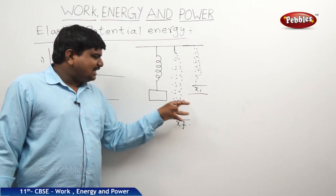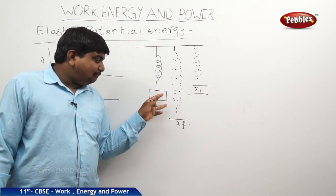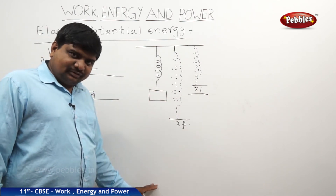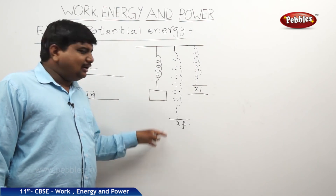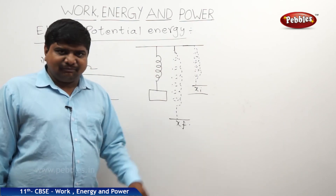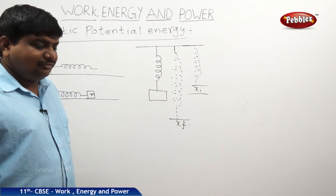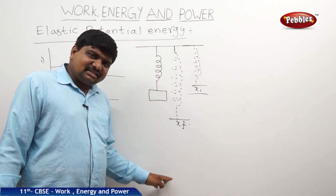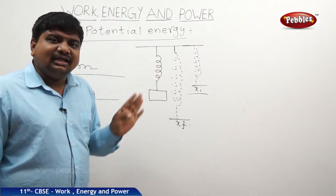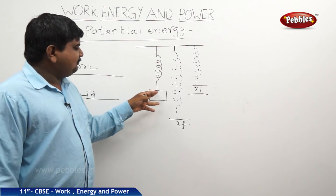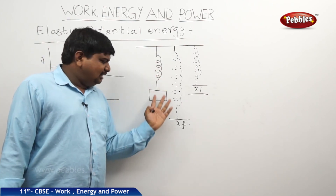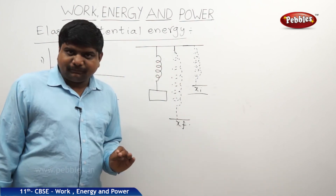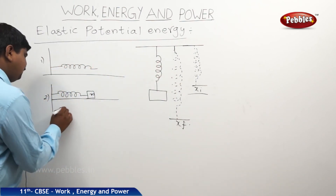The force which results in this expansion and compression under the applied load is the gravitational force. But this gravitational force should be overcome by a force within the spring, called the restoring force. Because of the restoring force, the spring can perform to and fro oscillations and return to the initial position. So restoring force plays the key role.